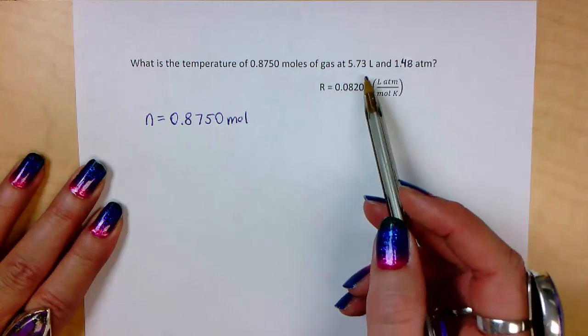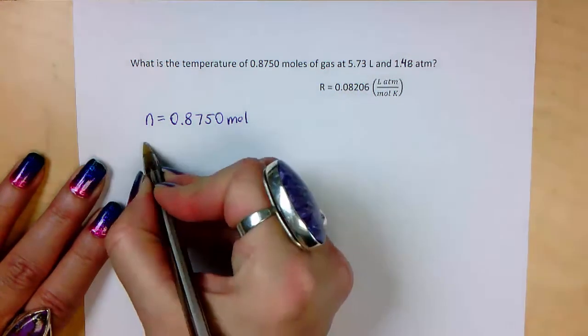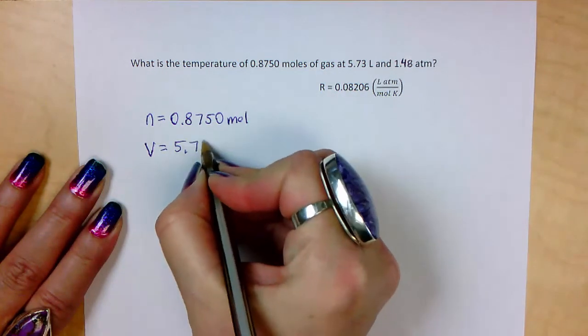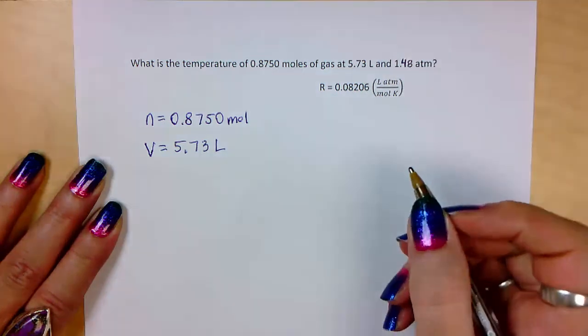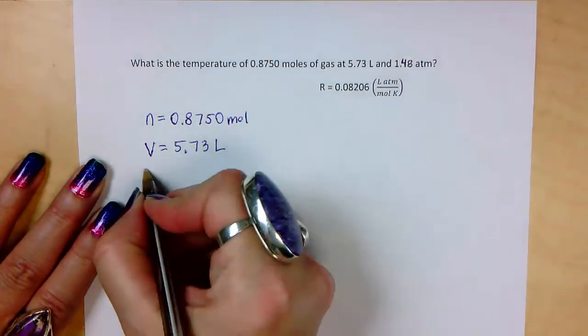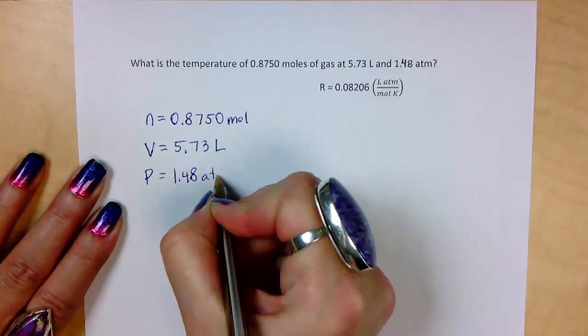Then we have 5.73 liters. What is liters? You are correct if you said a volume. So our volume is 5.73 liters. And then 1.48 atmospheres. That is a pressure. Pressure is 1.48 atmospheres.